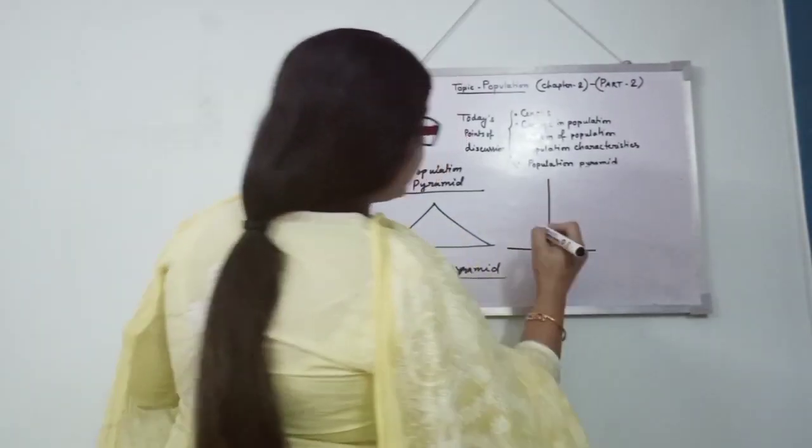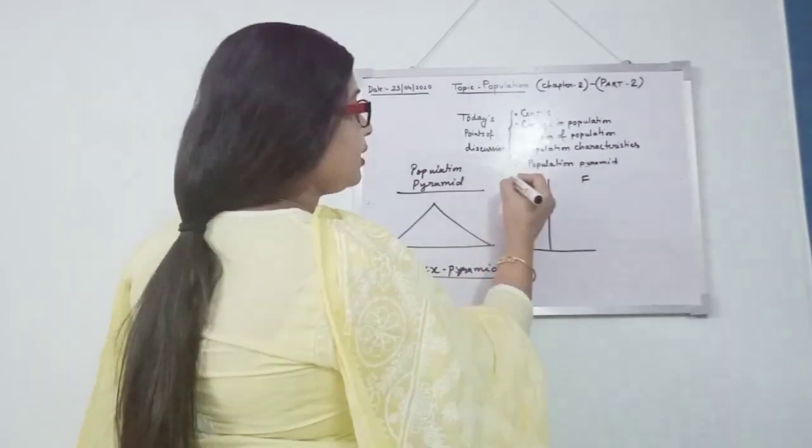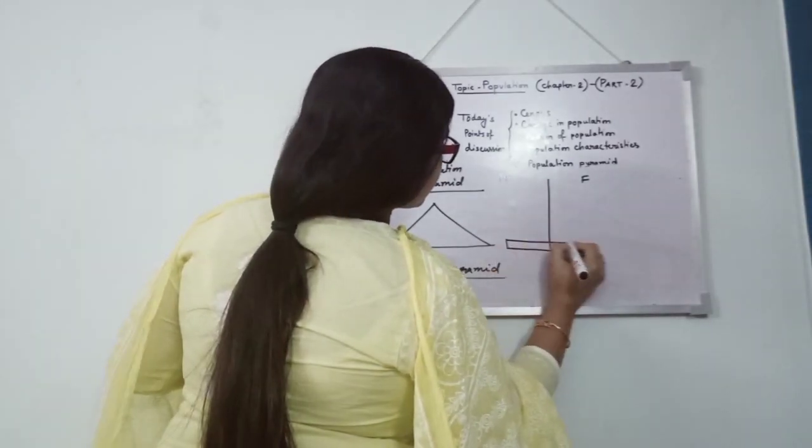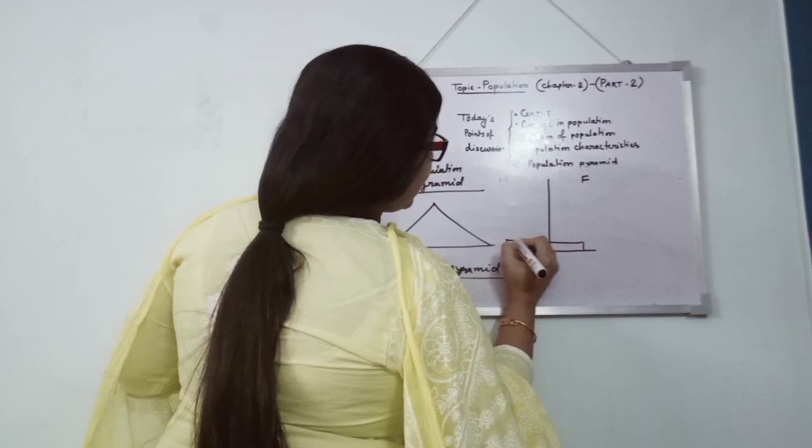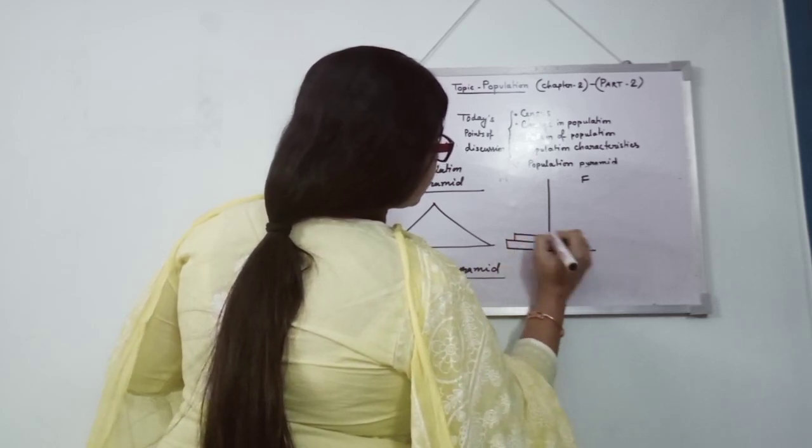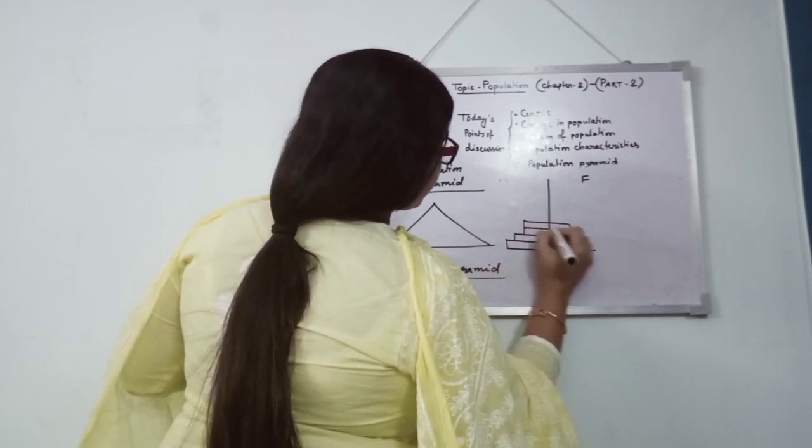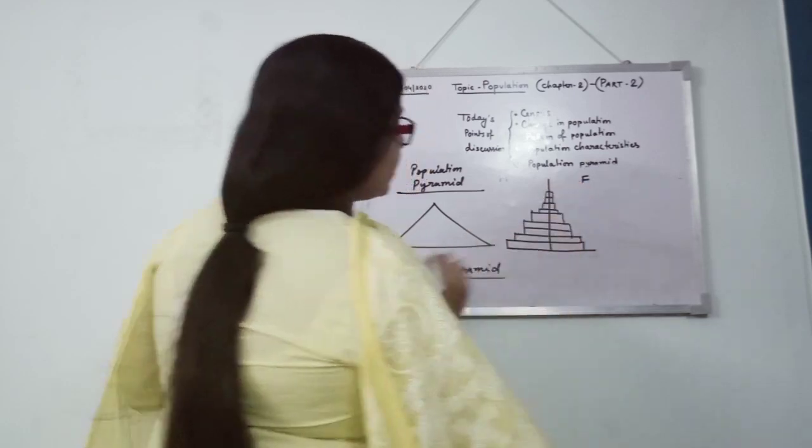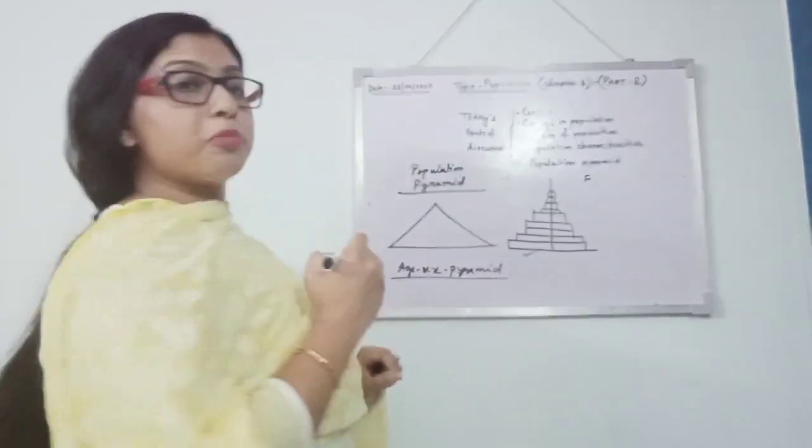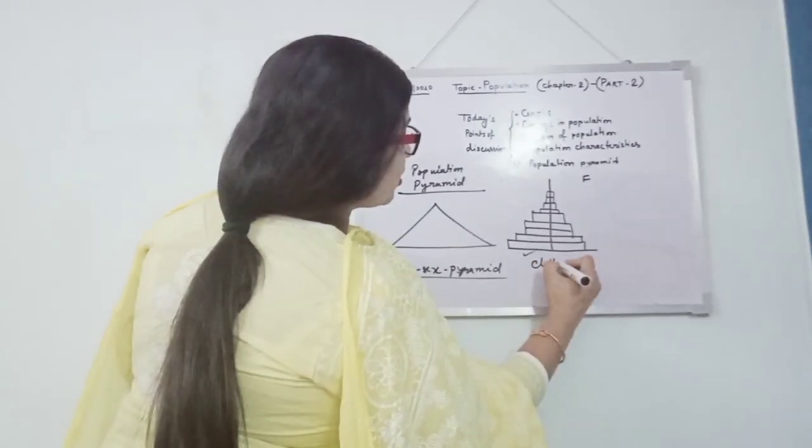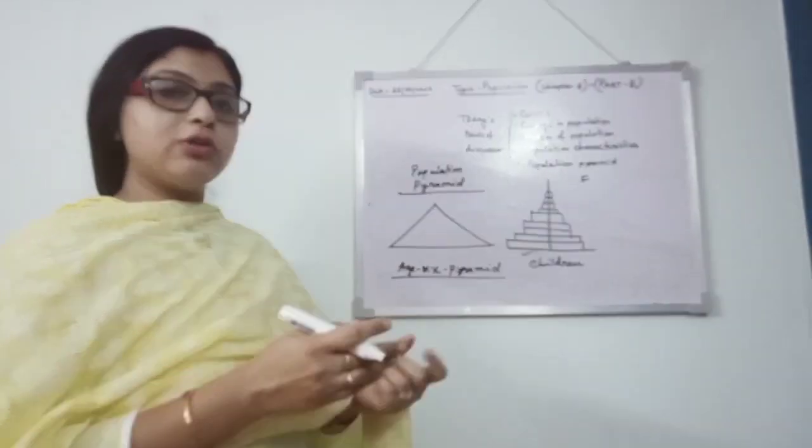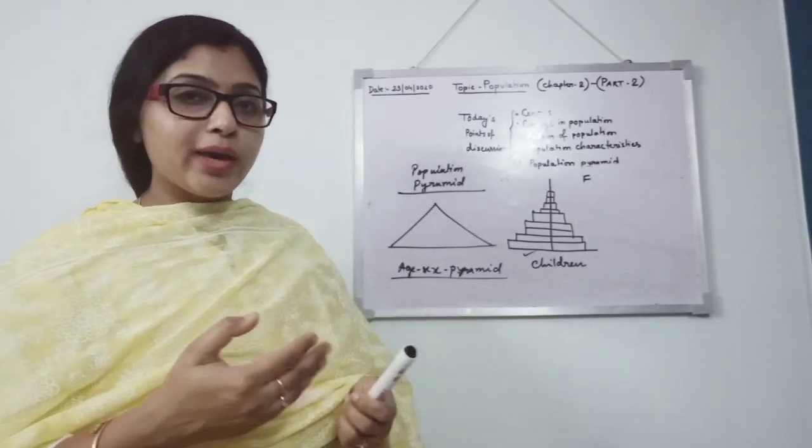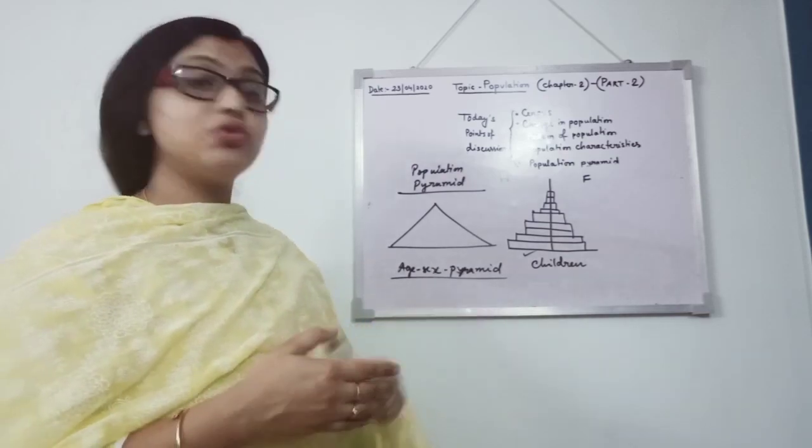First, this axis, always female will be at the right side and male will be at the left side. Here you are getting to see female less than male. Here you are seeing the base is broad, it means children. Children are more here. When children are more we need better education like schools, colleges. We need better nutrition for these children group.